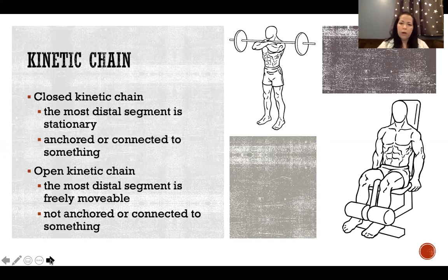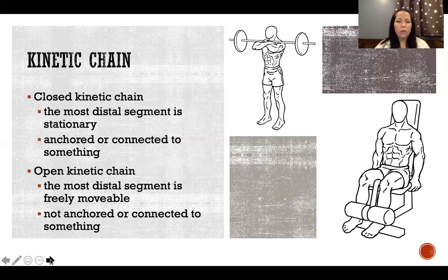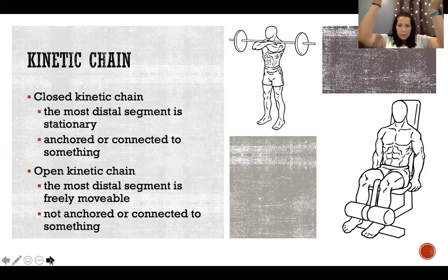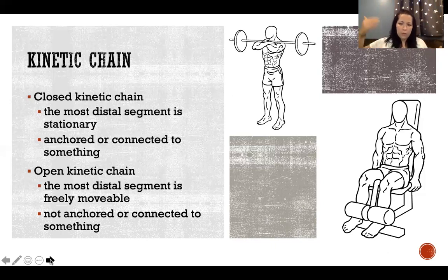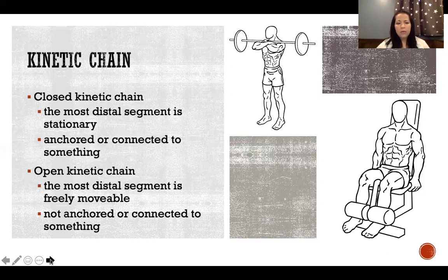An example of an open kinetic chain for legs is a leg extension, where the feet are moving up and down — not anchored or staying stationary. An example of a closed kinetic chain for upper extremities is a pull-up: your hands are stationary holding the bar, and your body is what moves up and down. There are fewer closed kinetic chain upper extremity movements than lower extremity ones, because most upper extremity actions have freely movable hands rather than the body moving around fixed upper extremities.